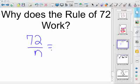Why does the rule of 72 work? First off, what is the rule of 72?